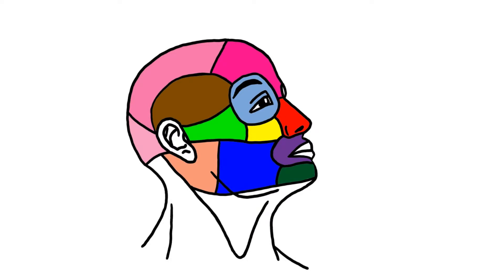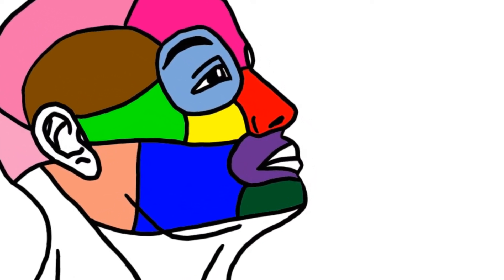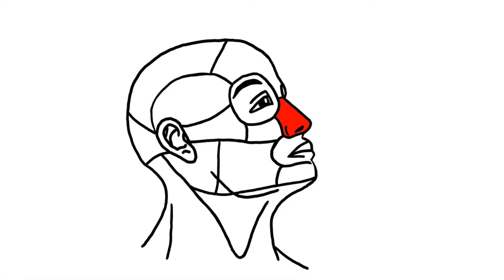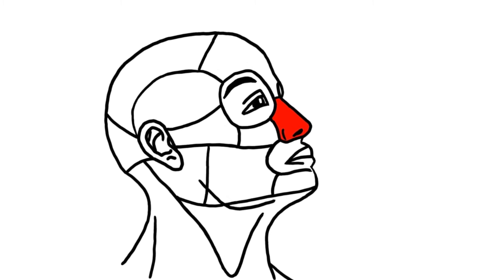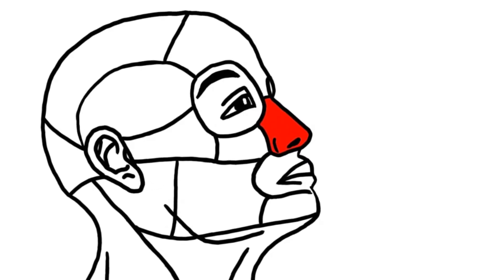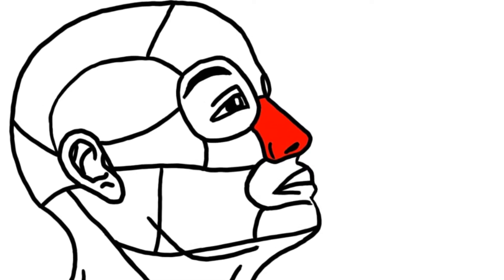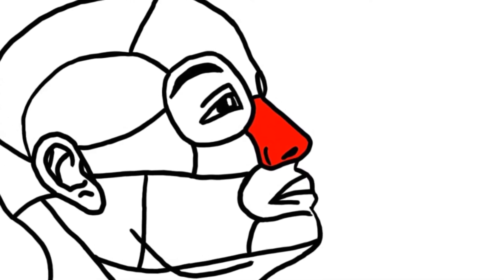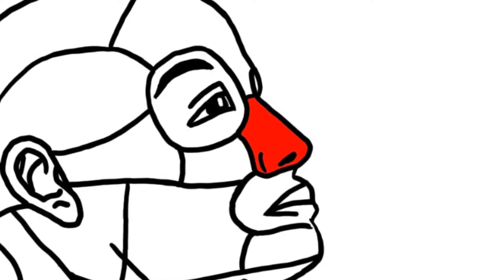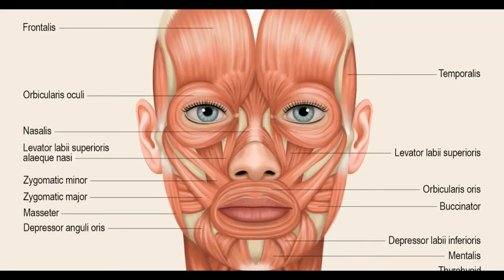Hey guys, it's Layla. Today we'll speak about the nasal and the oral regions of the face. Starting with the nasal region: on the superior surface you've got the medial part of the eyebrows, on the inferior you've got the attachment of the nasal septum or the oral region, and laterally you've got the nasolabial sulcus.